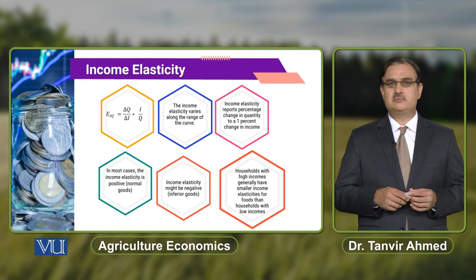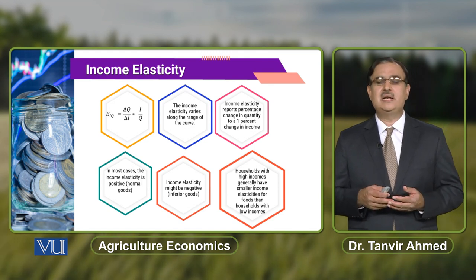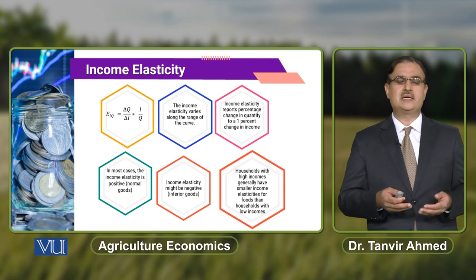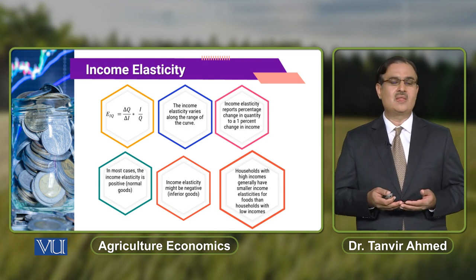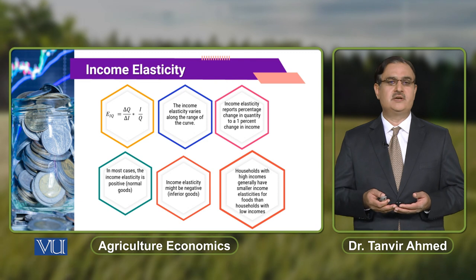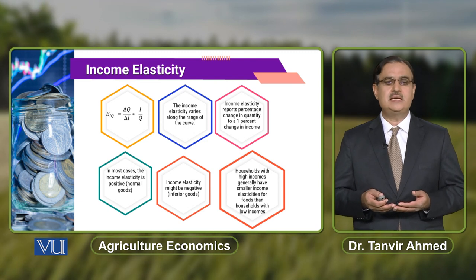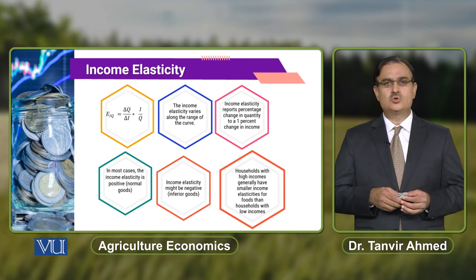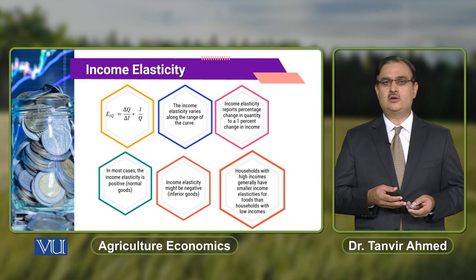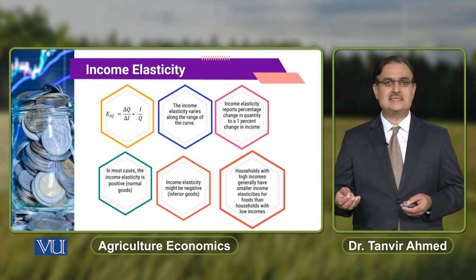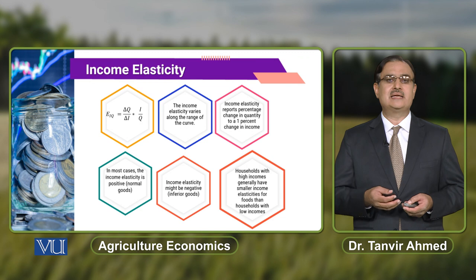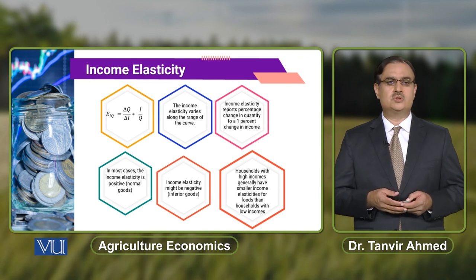Income elasticity of demand for food is relatively less for people who have high income compared to those individuals whose income is relatively low. So income elasticity of demand for food for high-income households is usually less than the income elasticity of demand for food for low-income households.